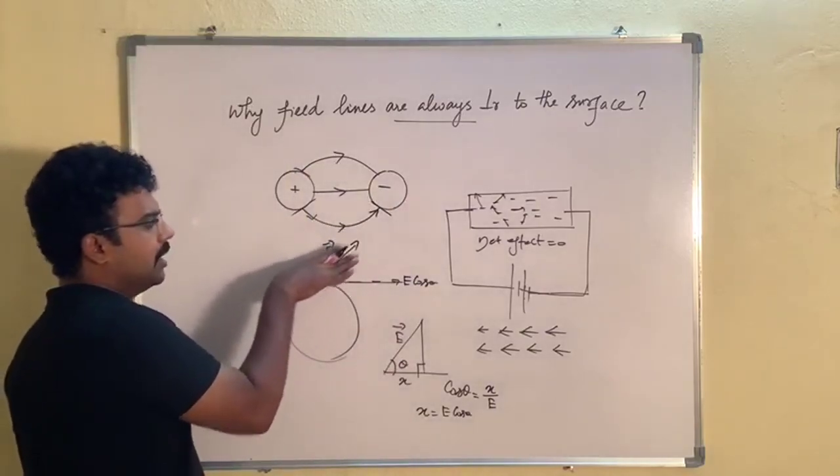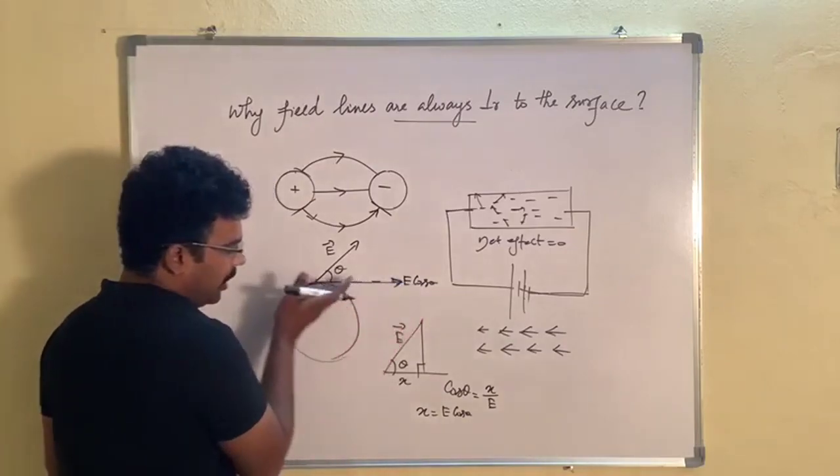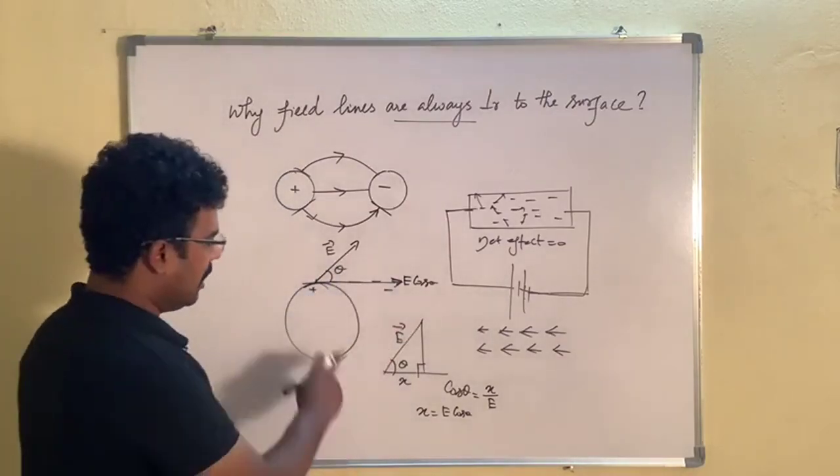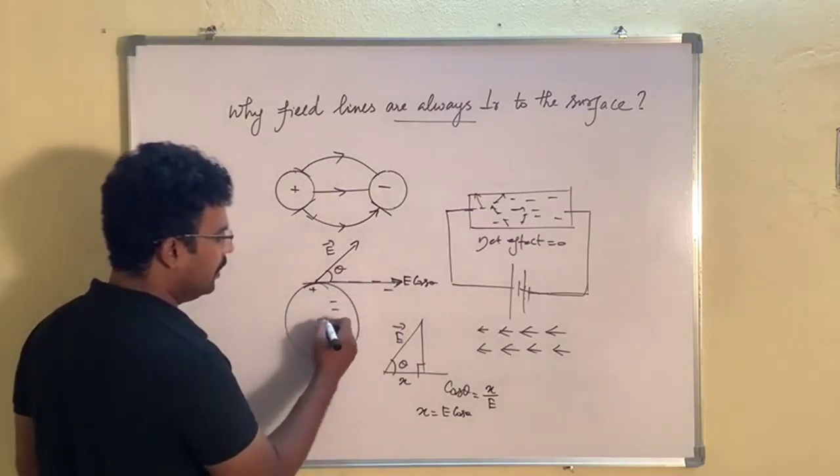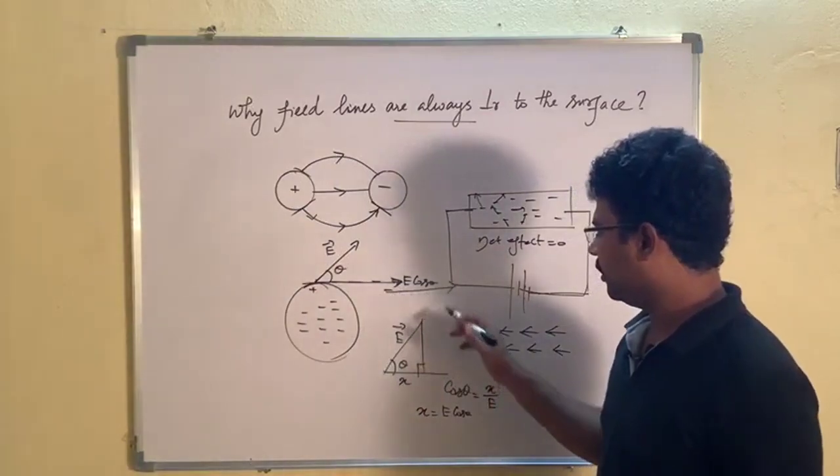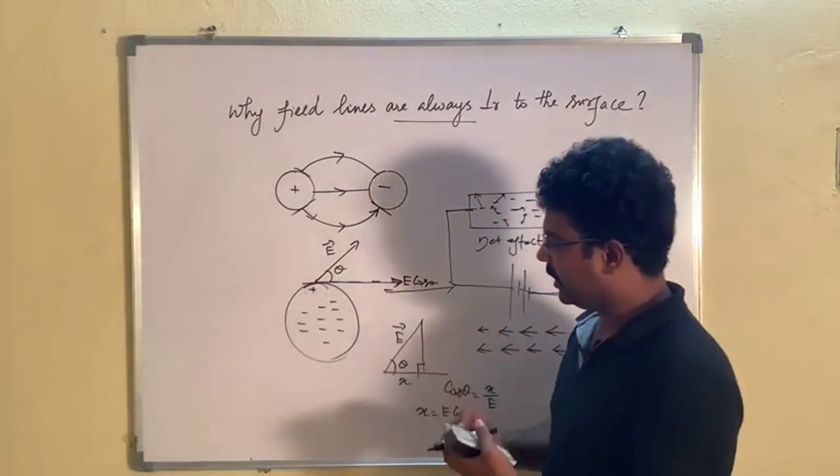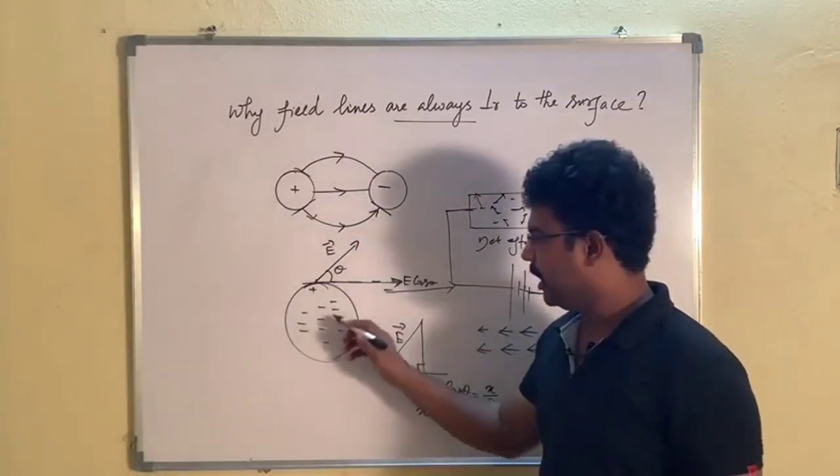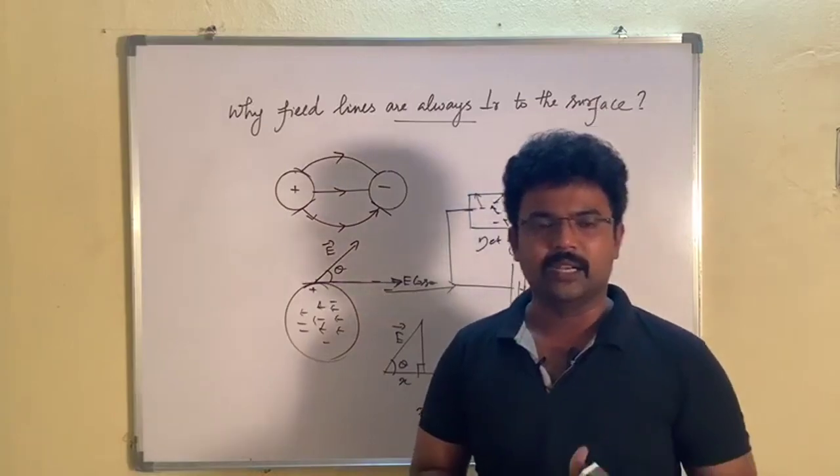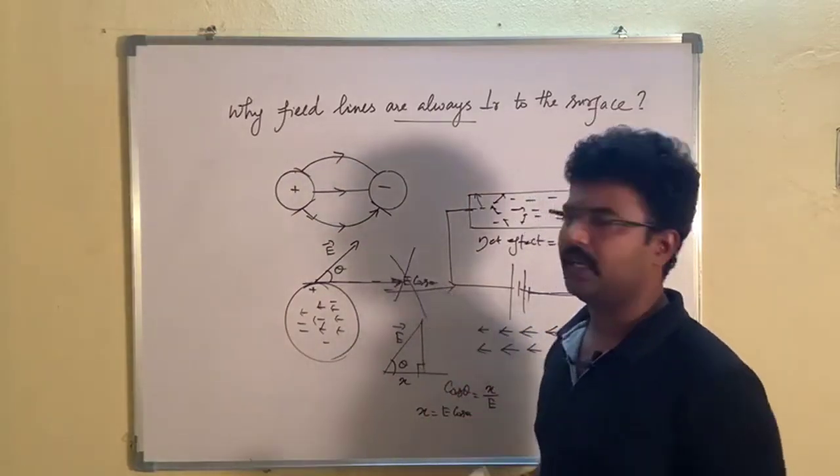This line is outward normal electric field. When we write down x, if we have a result, if we have this component, charges would move. But the net effect must be zero. That is why we don't need this component. That is the proof.